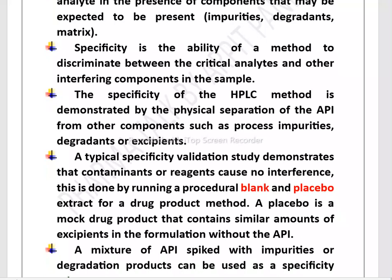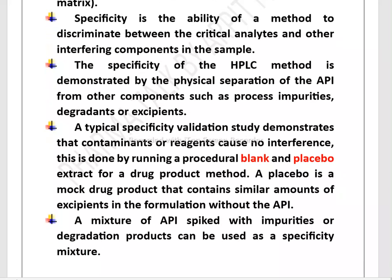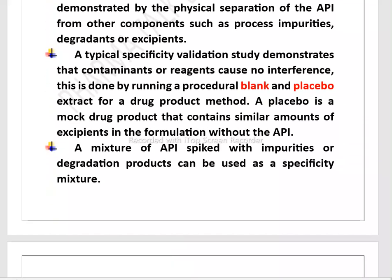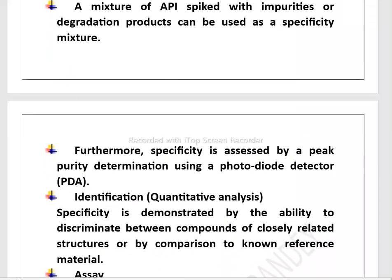This is done by running a procedural blank or placebo extract from a drug product. What is a placebo? A placebo is a mock drug product that contains similar amounts of excipients in the formulation without the API. The procedure is that a mixture of API is spiked with impurities or degradant products, which can be used as a specificity mixture. Specificity is also assessed by peak purity determination using a photodiode array (PDA) detector.